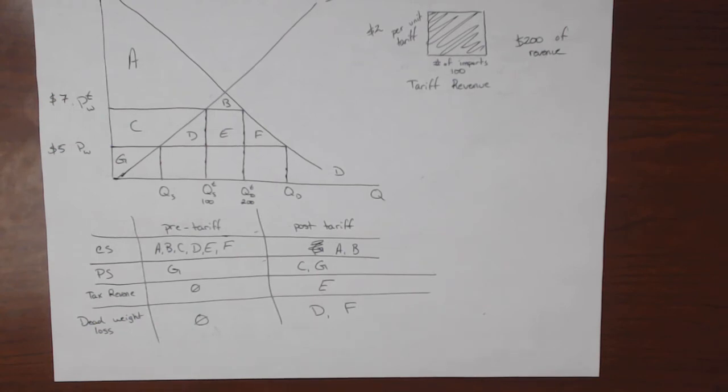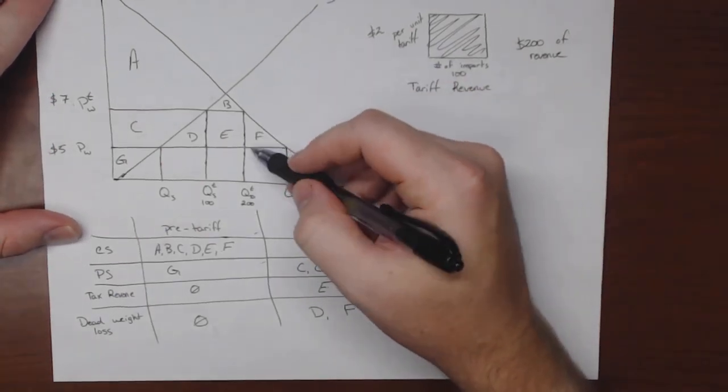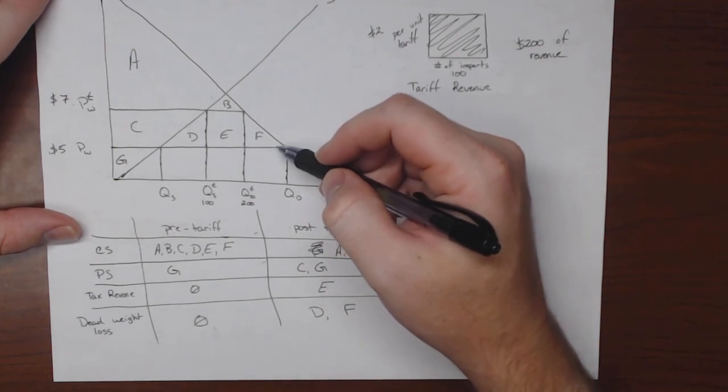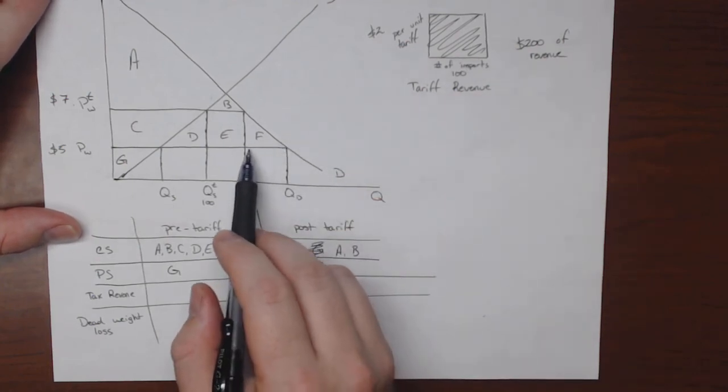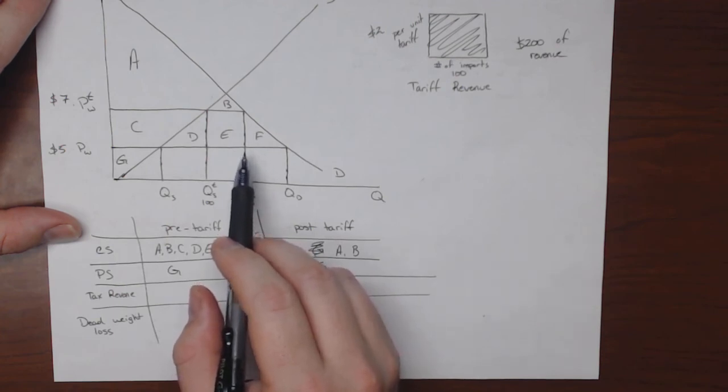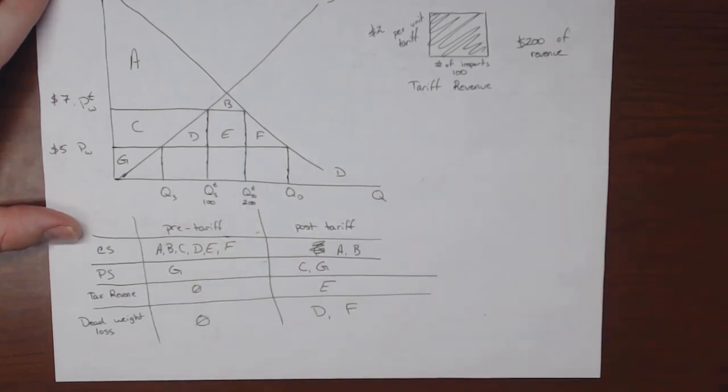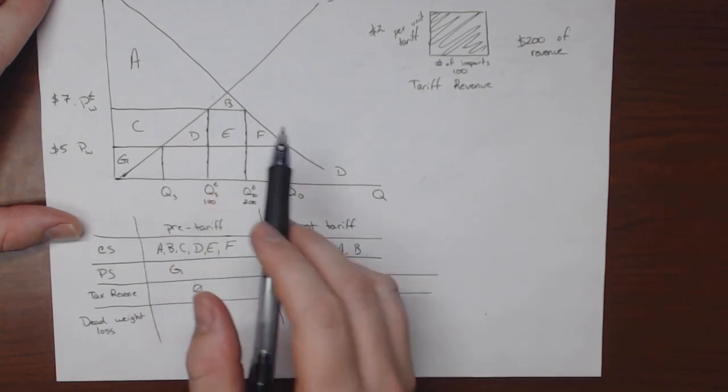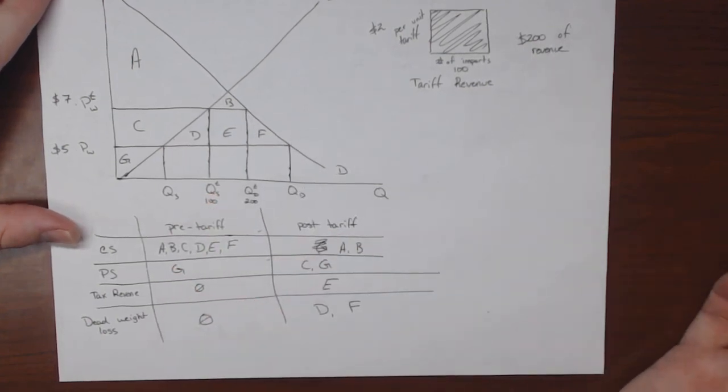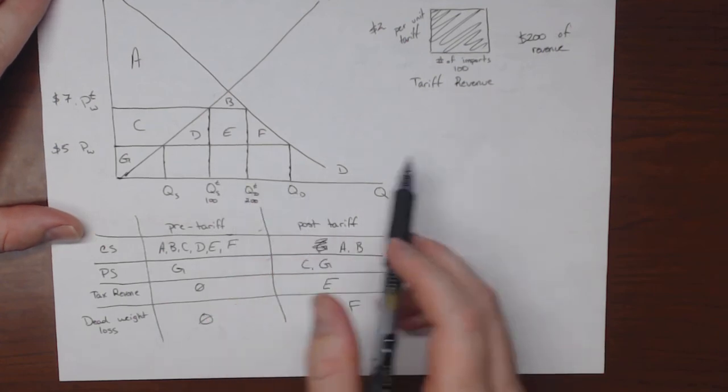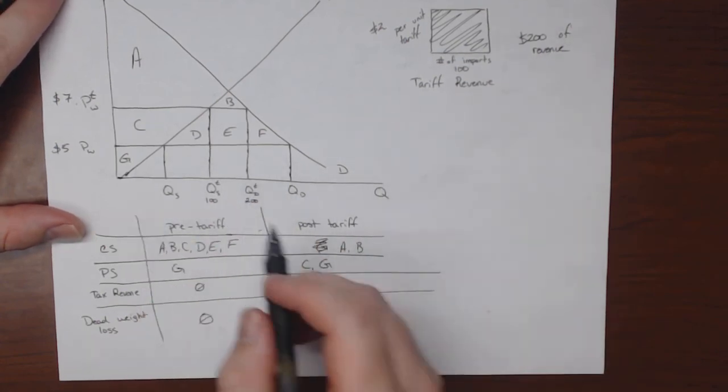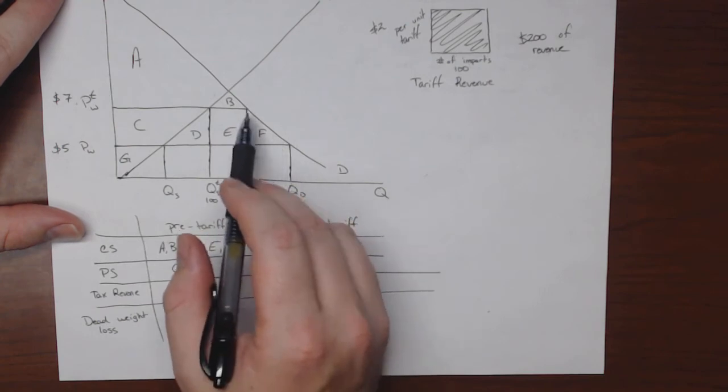Now F is a fairly obvious one. F is a deadweight loss because it represented trades that would have happened if there wasn't a tariff, but now they don't because of the tariff. So F is value that is foregone simply because there are no more exchanges. Consumers are buying fewer things. So F is a result of trades that don't happen.